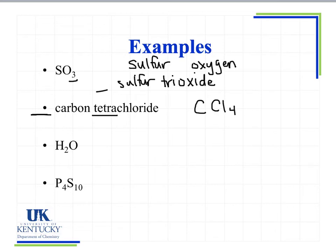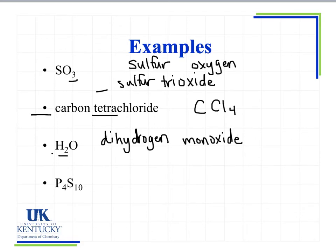Now H2O you probably recognize as water. But you may have seen the hoax email going around that talks about this evil substance called dihydrogen — because I have two hydrogen atoms — monoxide. Notice I use my prefix 'mono' here even though there was only one oxygen, because it's not the first element. So I have dihydrogen monoxide because I have one oxygen. We can call this water; that's the common name. The official IUPAC name following our nomenclature rules is dihydrogen monoxide.